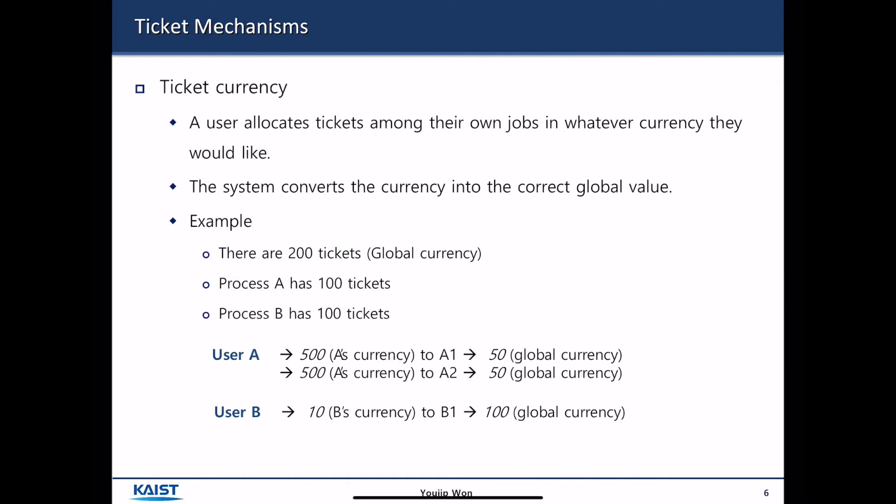There is a notion of ticket currency. A process may have a number of threads in it. So, process A, inside process A, there are three threads inside process A. And then process A wants to allocate its own share of CPU cycles among these three threads with a ratio of 3-1-1.